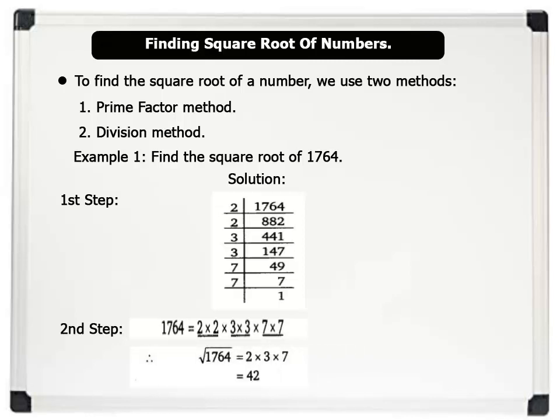Therefore, the square root of 1764 equals 2 times 3 times 7, which equals 42.